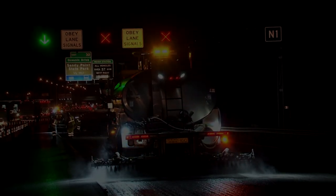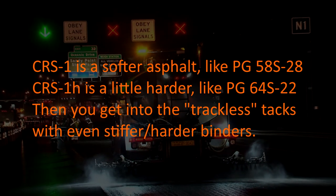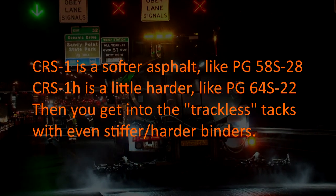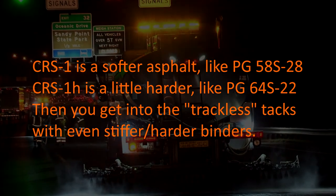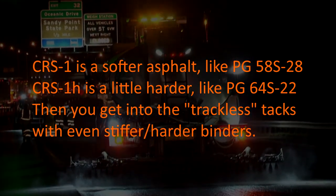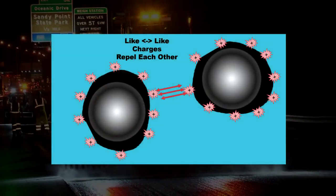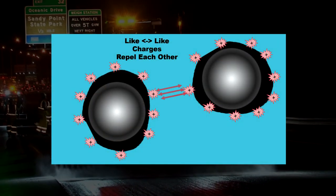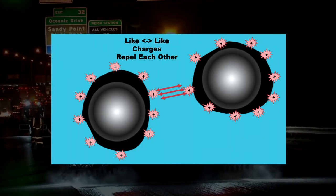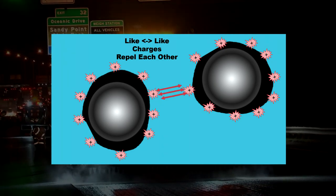The primary tacks used in Maryland are CRS-1 and CRS-1H. CRS stands for cationic rapid setting and refers to the presence of positively charged asphalt particles. Since all the asphalt particles have a like electrostatic charge, they repel each other and the asphalt particles are kept apart until the emulsion is applied to the surface of the roadway.